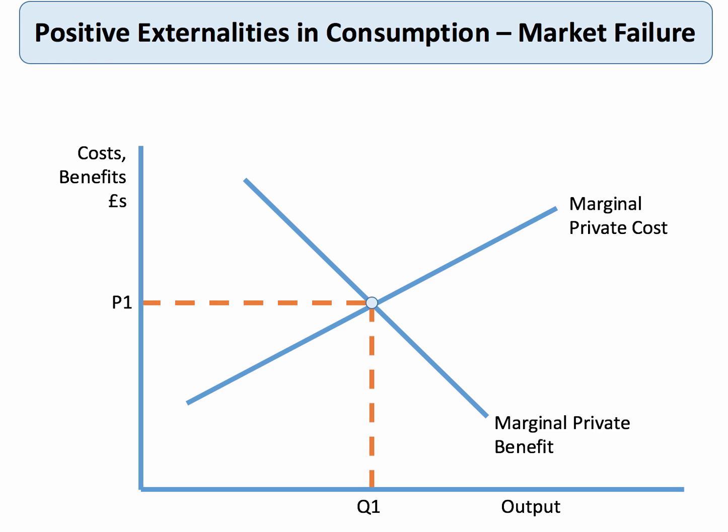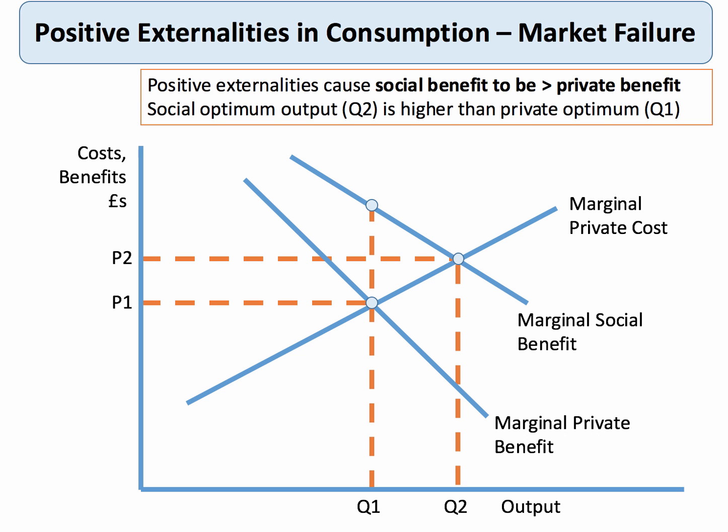So how do we show positive externalities diagrammatically? We start off by thinking about the narrow private costs and benefits of a consumption decision. The optimal point is where the private marginal benefit equals the private marginal cost. However, with positive externalities there are also external benefits to consider. The marginal social benefit lies above the marginal private benefit, and the vertical distance between MPB and MSB shows the external benefit at output Q1. Ideally, if we take into account the positive externalities, we'd have a higher output level, Q2, and the price would be higher — we value these things more highly.